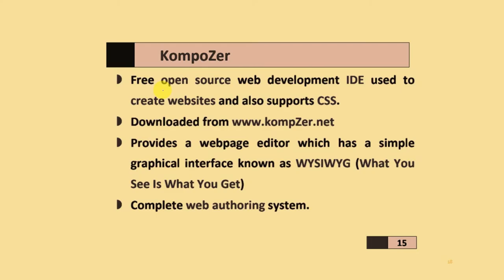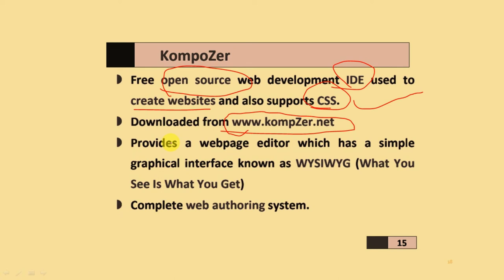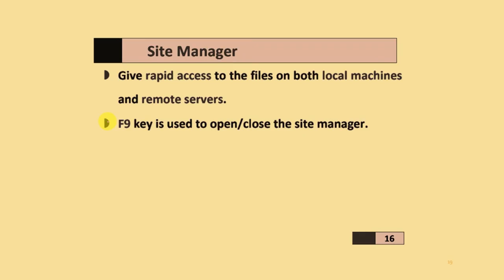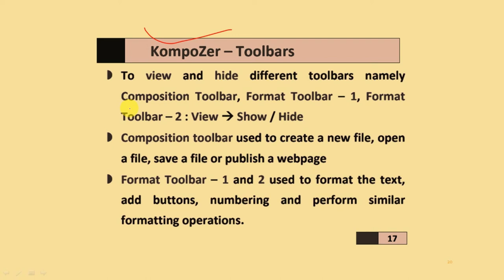Composer software is an open source web development IDE used to create different types of websites. It also supports CSS and JavaScript. You can download it from composer.net. It provides a webpage editor with a simple graphical interface called WYSIWYG (What You See Is What You Get). It is a complete web authoring system. The Site Manager gives rapid access to files on both local machines and remote servers, and you can use the F9 key to open or close the Site Manager. Composer also provides different types of toolbars.